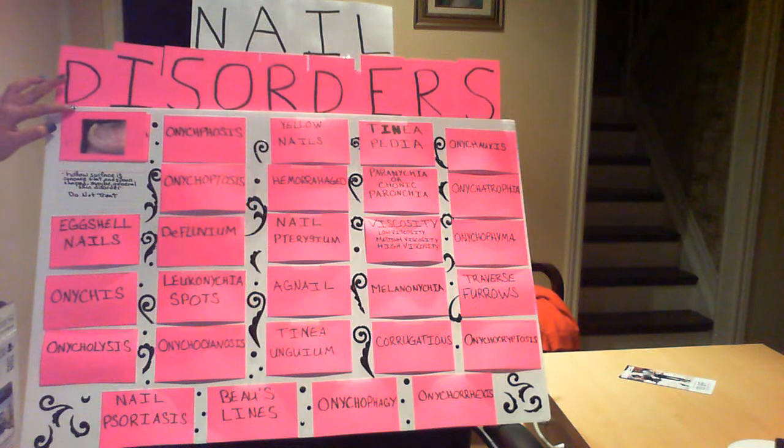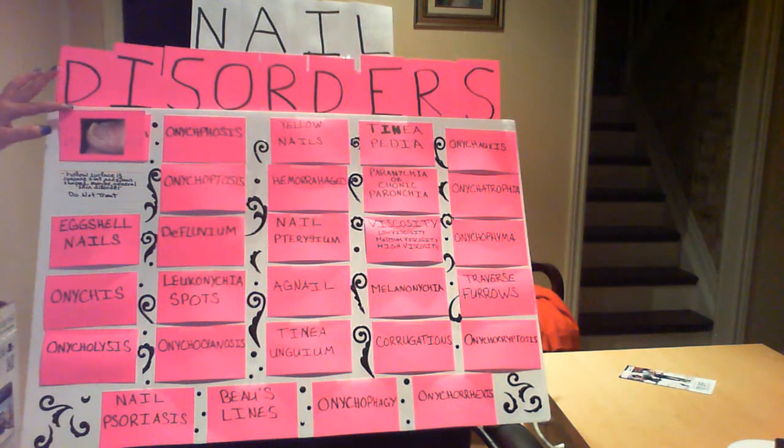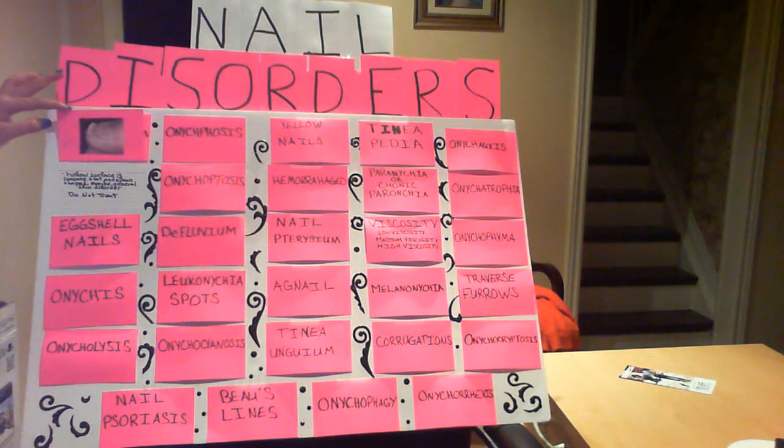Cholonychia — a hollow surface that is concave and flat, and spoon shaped. May be a general skin disorder.